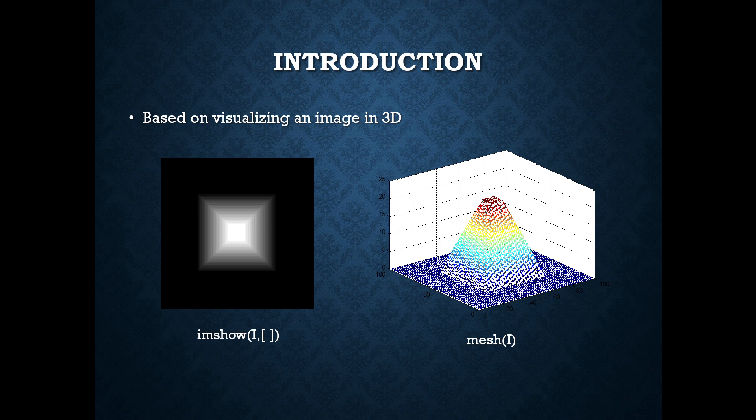The imshow command is used to display the indexed image x. In imshow we will give the input as I which is the 2D image and the map function which displays the indexed image x with the color map. Imshow of the image name displays the image stored in the graphics file.